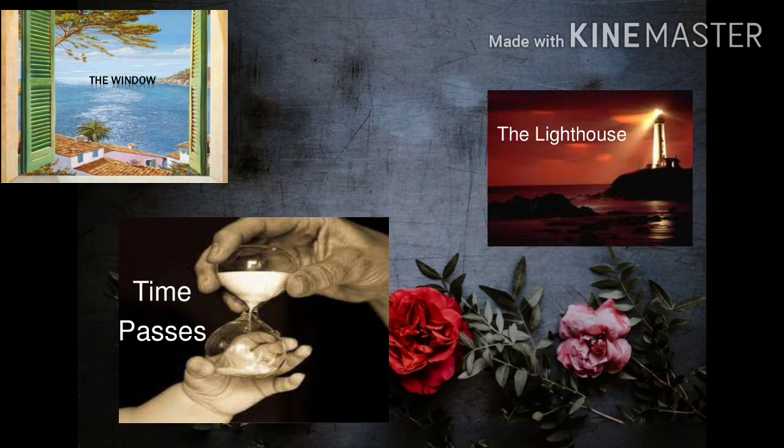Very important to note is that the novel is divided into three parts: The Window, Time Passes, and The Lighthouse. Many times this question is asked in the examination — which are the three parts of To the Lighthouse? The three parts are The Window, Time Passes, and The Lighthouse.